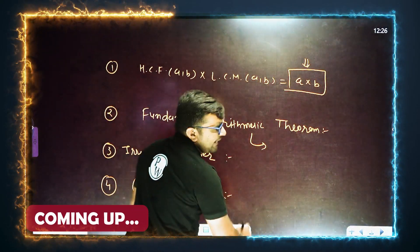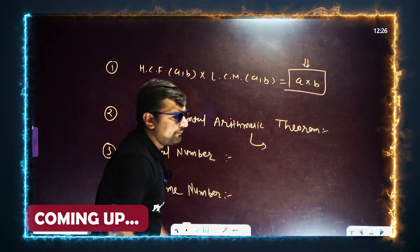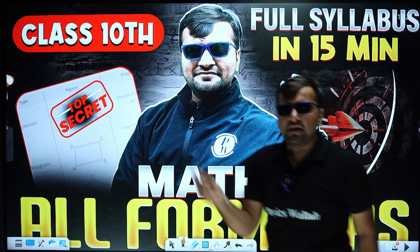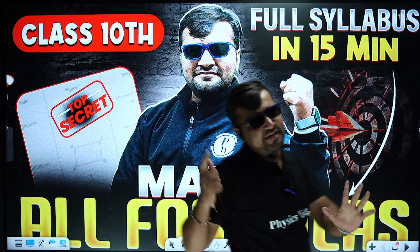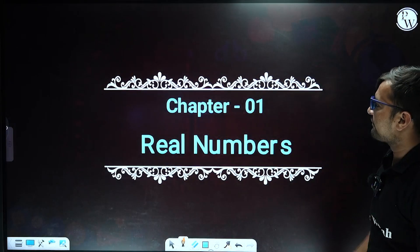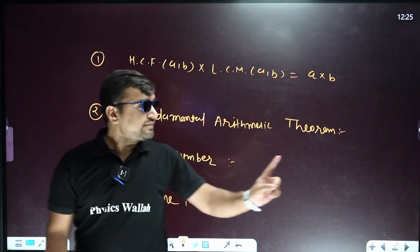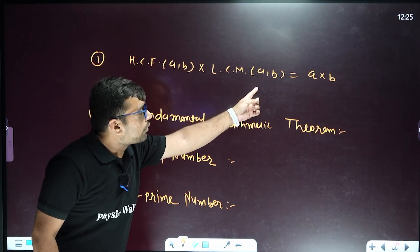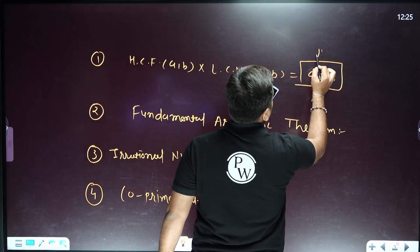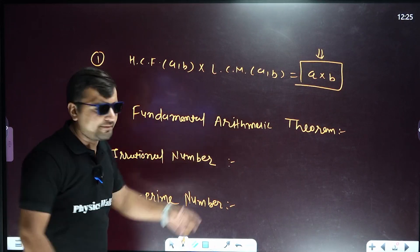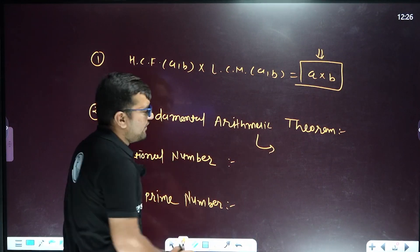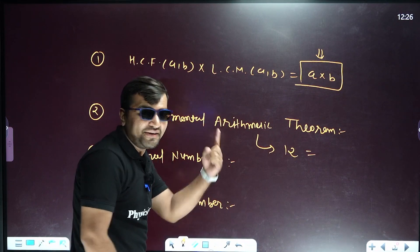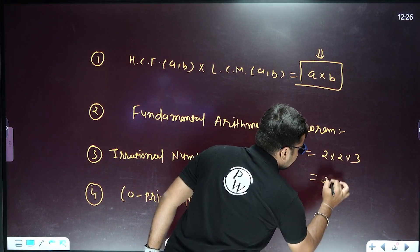Hello dear students, today we discuss all maths 14 chapters' formulas in 15 minutes. First, real numbers: HCF of two positive integers a, b multiplied by LCM of a, b equals the product of those two positive integers. Next, the Fundamental Arithmetic Theorem: any composite number can be written as a product of prime numbers. For example, 12 equals 2 into 2 into 3, that is 2 squared into 3, in a unique way.